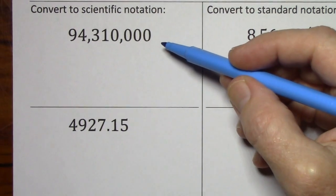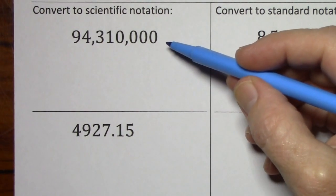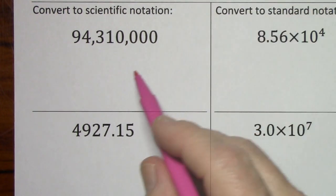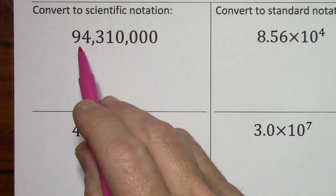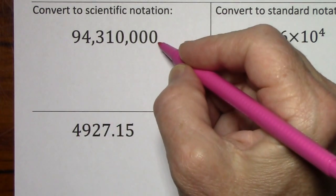So looking at our first example, if we want to convert this to scientific notation, of course we can't change the value, but we can change the way it looks. We're going to want one digit in front of the decimal, so if a decimal is not written, we'll have to put it in.